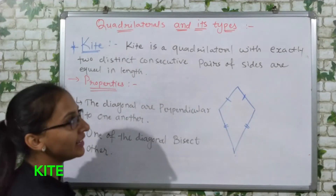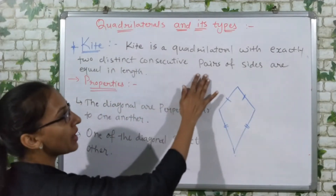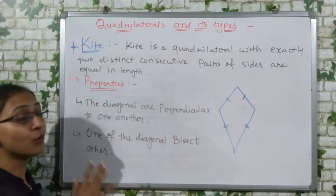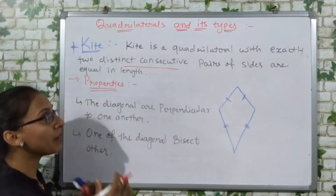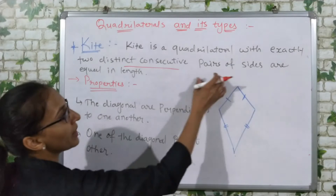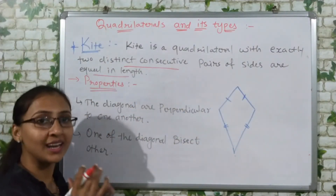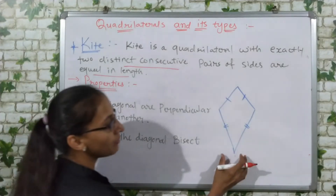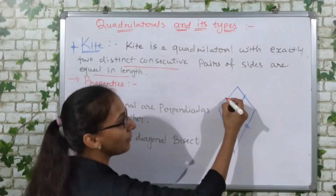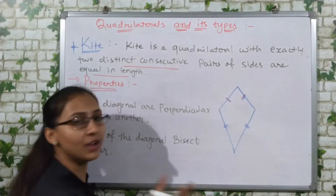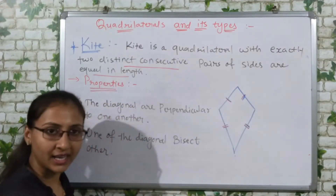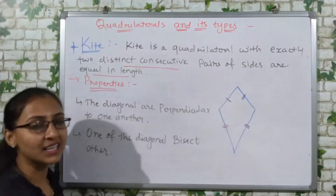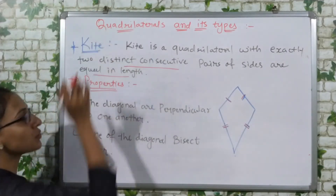Next one is kite. A kite is a quadrilateral with exactly two distinct consecutive pairs of sides that are equal in length. So you have two pairs — in the first pair, the two sides have equal measurement, and in the second pair, the other two sides are equal. So if you have any shape like this with two such pairs of equal consecutive sides, we call it a kite.